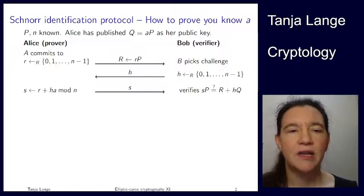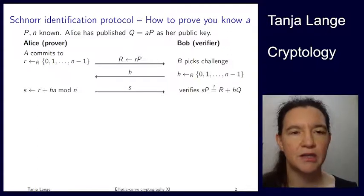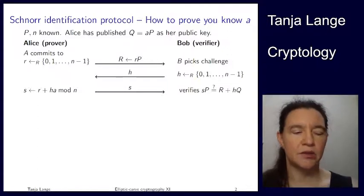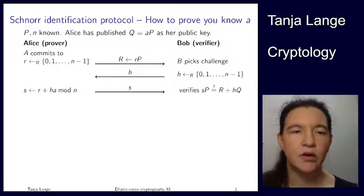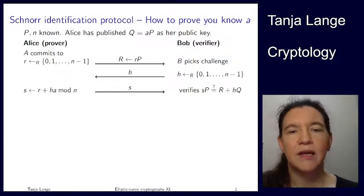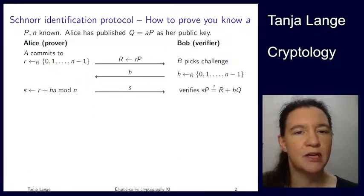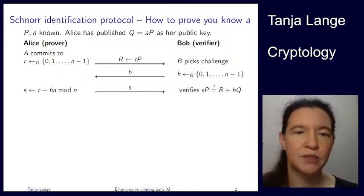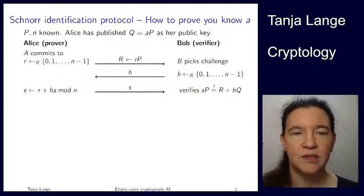Alice, at the very beginning, picks a number r which is between zero and n minus one. So n is the order of P, and everybody knows P, everybody knows n, everybody knows how to compute with elements of the elliptic curve.